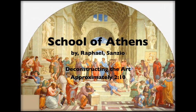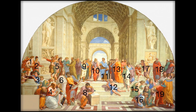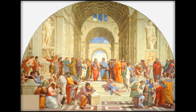School of Athens by Raphael Sanzio — Deconstructing the Art. Art historians have suggested that nearly every great Greek philosopher can be found within the painting, but determining who is depicted is challenging because Raphael made no notes nor designations and there are no historical documents to explain the painting. Raphael invented a system of iconography which alluded to various philosophers.